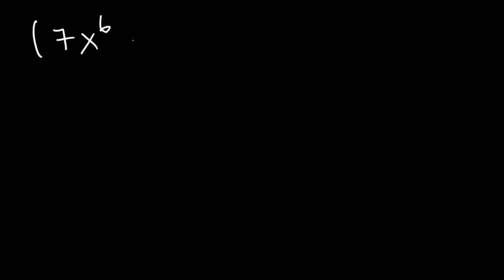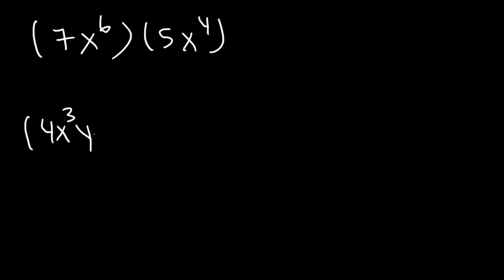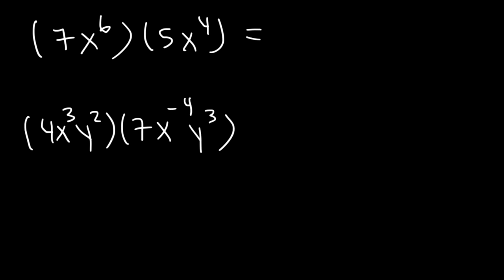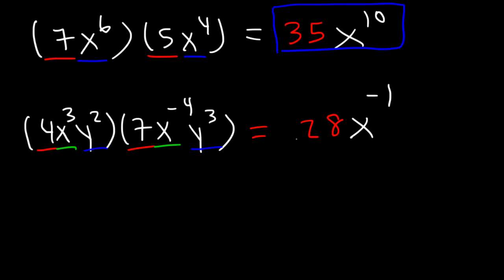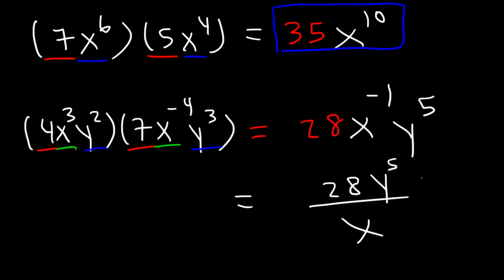Try these: 7x to the 6th times 5x to the 4th, and 4x cubed y squared times 7x to the negative 4th y to the 3rd. For the first, 7 times 5 is 35, and 6 plus 4 is 10, so it's 35x to the 10th. For the second, 4 times 7 is 28; x cubed times x to the negative 4th gives 3 plus negative 4, which is negative 1; and y squared times y cubed gives 2 plus 3, which is 5, so y to the 5th. We get rid of the negative exponent by moving x to the bottom, so the answer is 28y to the 5th divided by x.